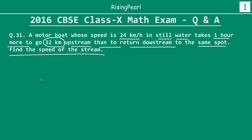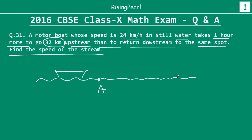Let's first understand what we are talking about here. So let's say this is a stream and we have a boat. The boat is going from this point — let's draw the stream a bit more. This is point A and this is point B, and the stream is flowing in this direction. So let's say the speed of the stream is x. The stream is flowing this direction, and the speed of the boat is some number — let's call it y.